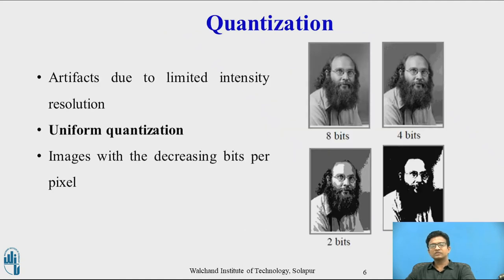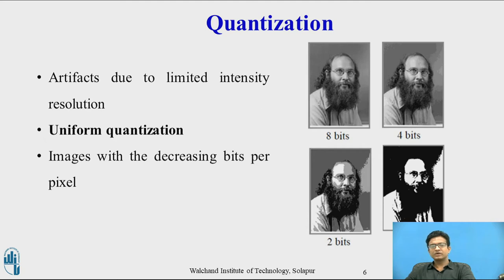Quantization is an artifact due to limited intensity resolution, where frame buffers have a limited number of bits per pixel and physical devices have a limited dynamic range. In uniform quantization, images with decreasing bits per pixel are shown — you can see the difference between 8-bit, 4-bit, 2-bit, and 1-bit.